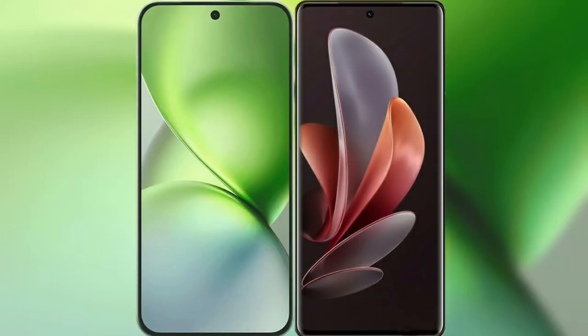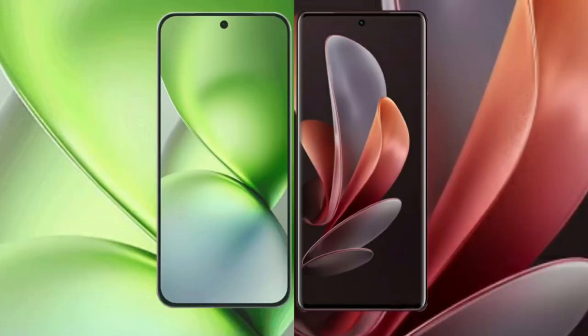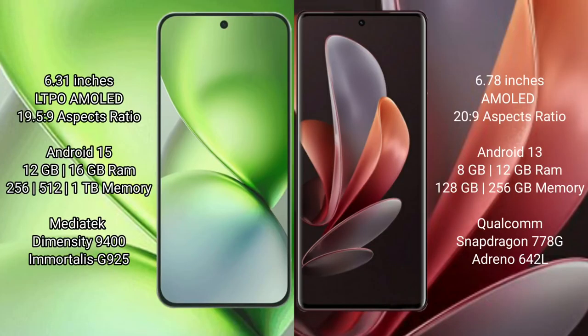I will compare the new Vivo X200 Pro Mini with Vivo V29. Vivo X200 Pro Mini has a 6.31-inch LTPO AMOLED display with an aspect ratio of 19.5:9. Vivo V29 has a 6.78-inch AMOLED display with an aspect ratio of 20.9:9.